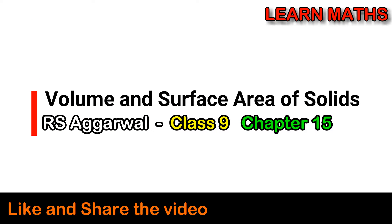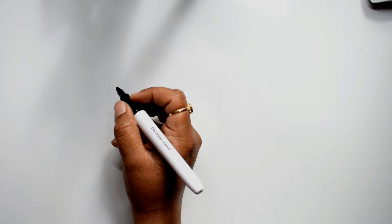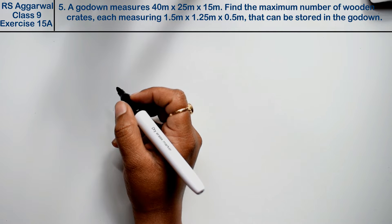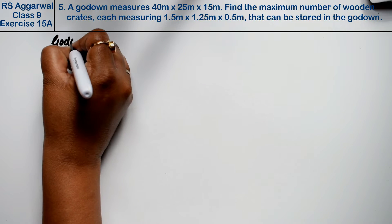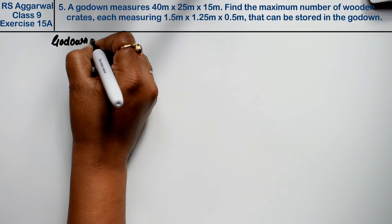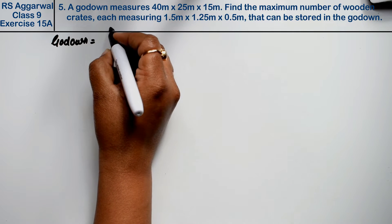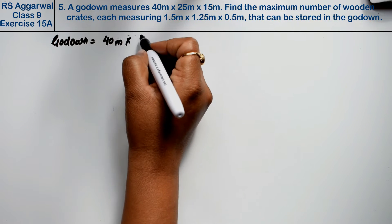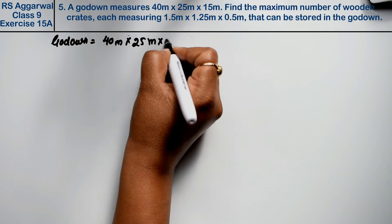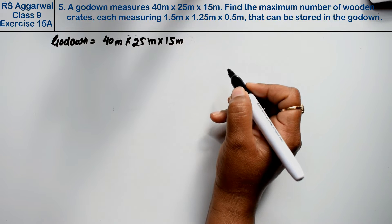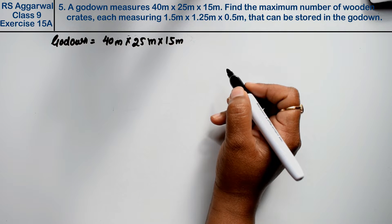Let's do question number 5 of exercise 15A, volume and surface area of solids. A godown measures 40m × 25m × 15m. Find the maximum number of wooden crates each measuring...